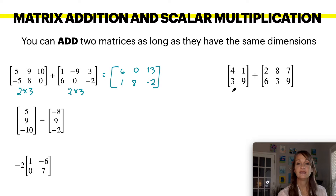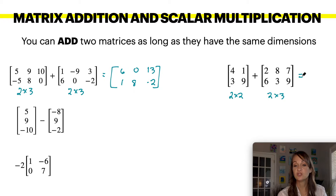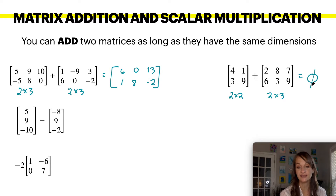In this case, this is a two by two matrix and this is a two by three matrix. The dimensions are not the same, so therefore you cannot add these two matrices together.